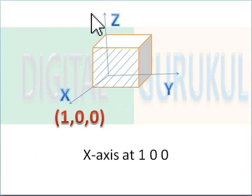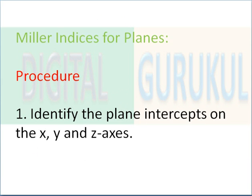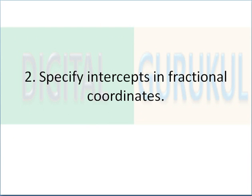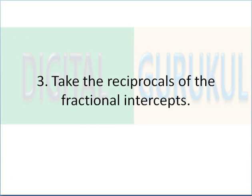Let's take an example with coordinates (1, 0, 0). The procedure to find Miller indices is: first, identify the plane intercepts on the x, y, and z axes. Second, specify the intercepts in fractional coordinates. Third, take the reciprocal of the fractional intercepts, and after that you will get the Miller indices.